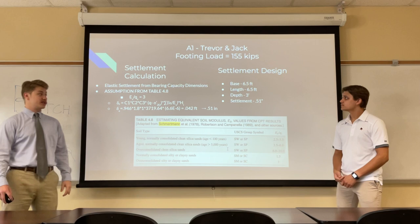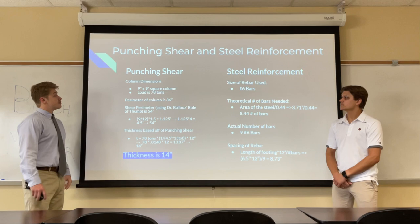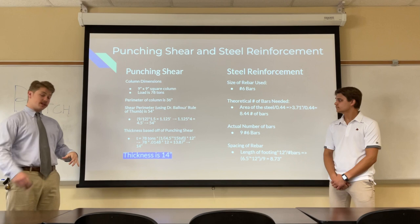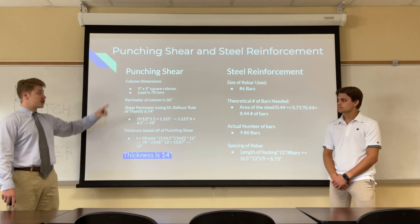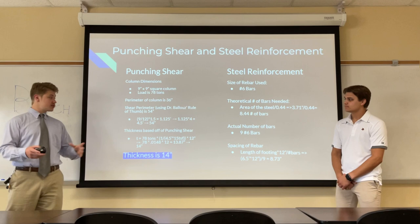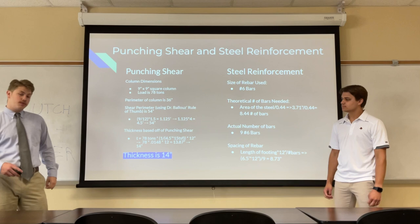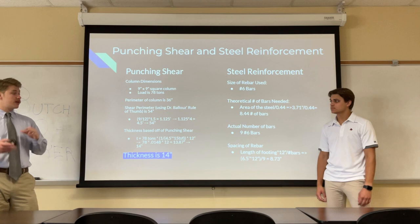For punching shear of the column into the footing, we have a 9-inch by 9-inch square column with a load of 78 tons. The column perimeter is 36 inches, and using Dr. Blue's rule of thumb, we calculated a shear perimeter of 54 inches. The footing thickness based on punching shear came out to 14 inches. So our final footing is 6.5 by 6.5 feet, 14 inches thick, embedded 3 feet into the soil.